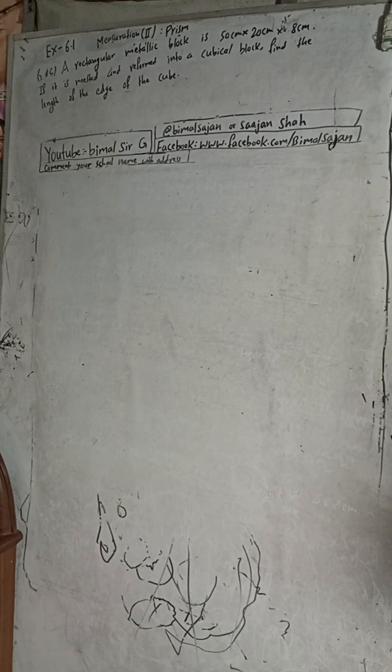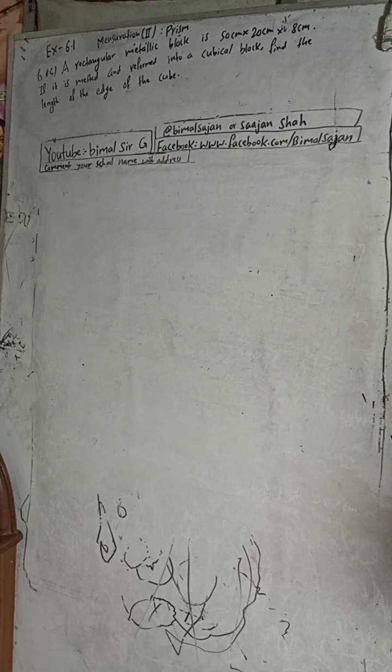Class 9 and 10 students, welcome back to Bhimalsarji YouTube channel. This is question number 6c, Exercise 6.1, Mensuration second part — Prism. Check the playlist, you will get many solutions of class 9 and 10 of science and maths. Now I will start this solution.